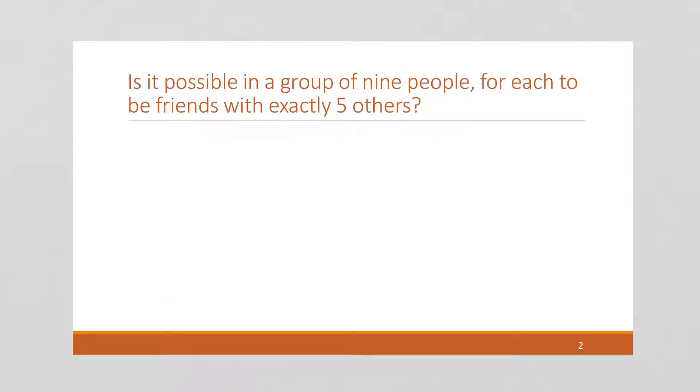So here we have a question: Is it possible in a group of nine people for each to be friends with exactly five others? Well, that's an interesting question. To solve it, I think we should start by constructing an acquaintance graph where each of these nine people is represented by a vertex and each friendship by an edge.